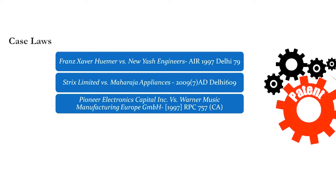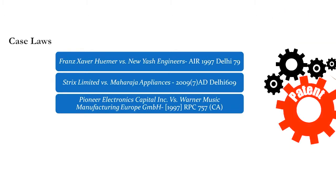For instance, if there are aspects related to a patentee's conduct — either before the patent office, which are not necessarily grounds of revocation under section 64, or in the market, which are not necessarily grounds under section 64 — then, apart from raising grounds under section 64 read with section 107, it is absolutely within the rights of the defendant to point out those aspects of the patentee's conduct which have a bearing on equity, and in turn on the grant of an interim injunction.